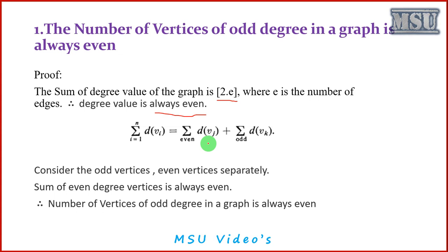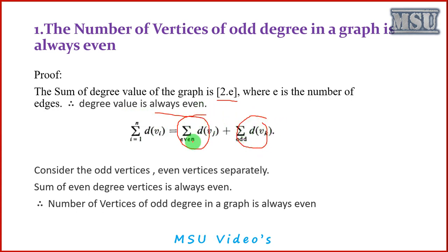I am splitting the total vertices in a graph into two different groups. The summation from i equal to 1 to n of degree of v_i equals the sum of degrees of even-degree vertices plus the sum of degrees of odd-degree vertices. I am grouping the vertices into two groups: one is the set of vertices of even degree and the other is the set of vertices of odd degree. The total degree value is always even, so even plus even produces an even number.